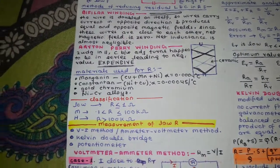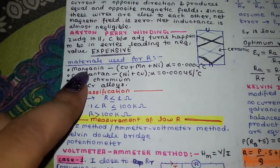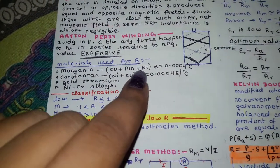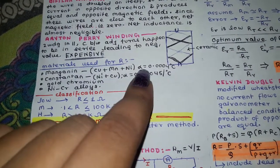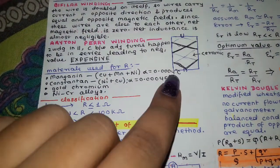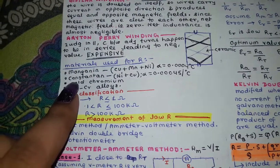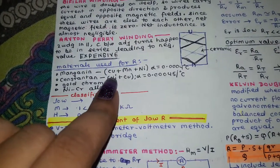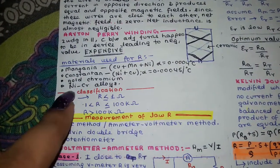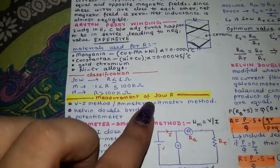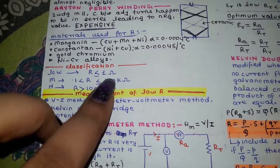Materials used for making resistances include: manganin (copper-manganese-nickel), which has a very low temperature coefficient; constantan (nickel-copper); gold chromium; and nickel-chromium alloys. The temperature coefficient of resistance should be as low as possible.